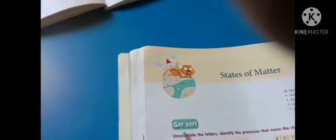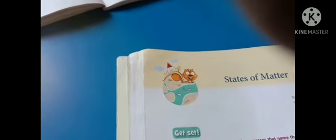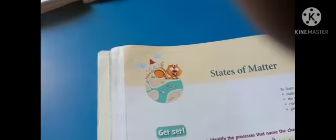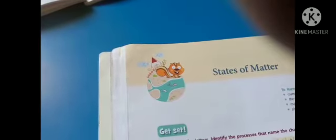Listen children. We will go to the lesson. Get set. Unscramble the letters, identify the process. The name of the changes of the state of matter. Ikada zigzag letters sunnna ibi meiru identify chesira yandhi, children.